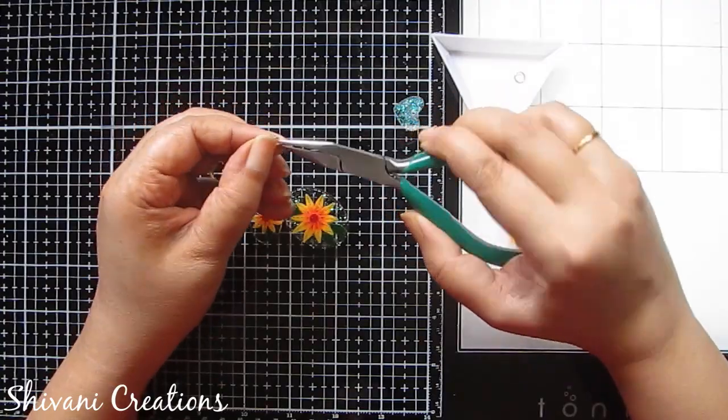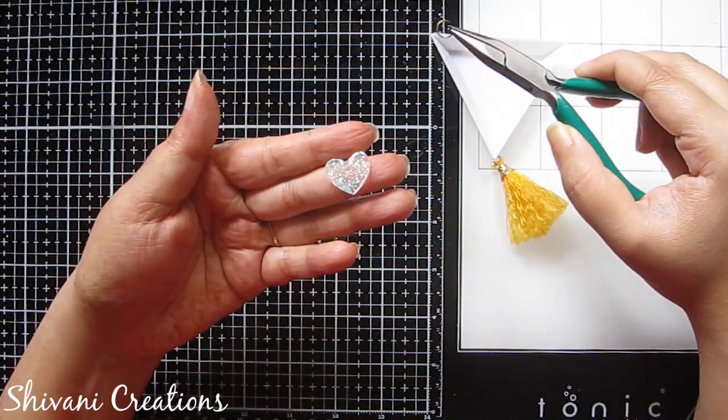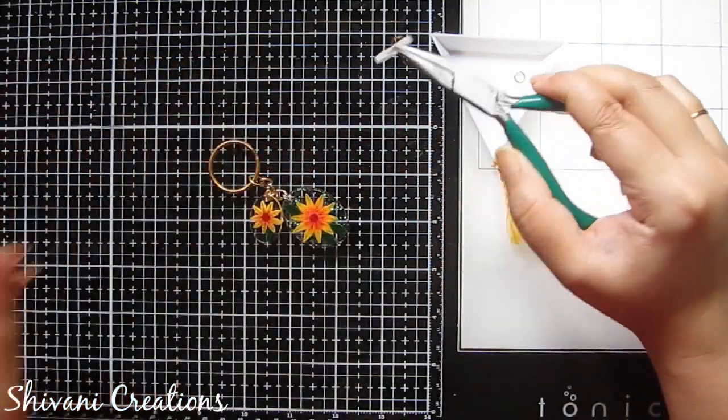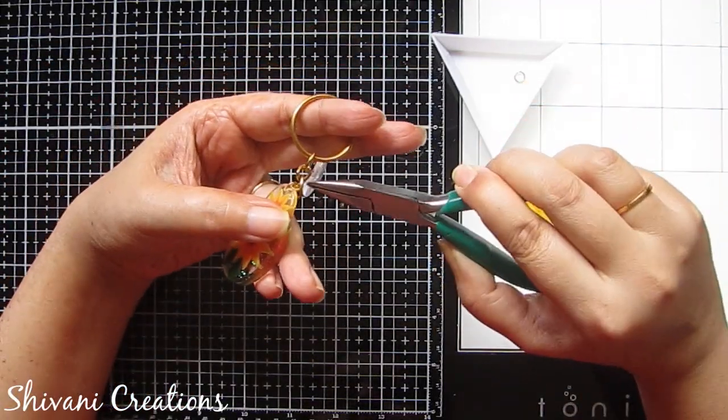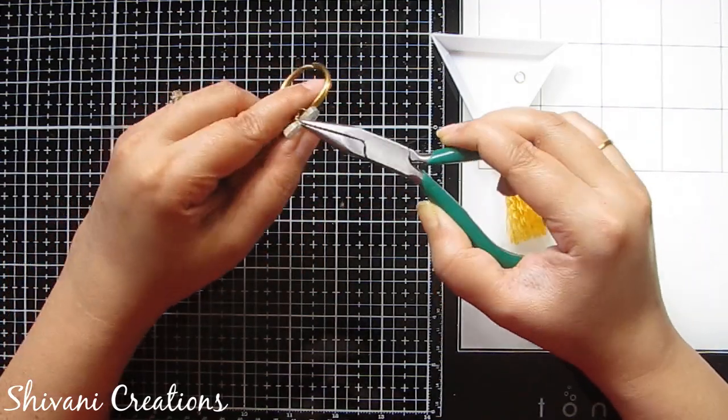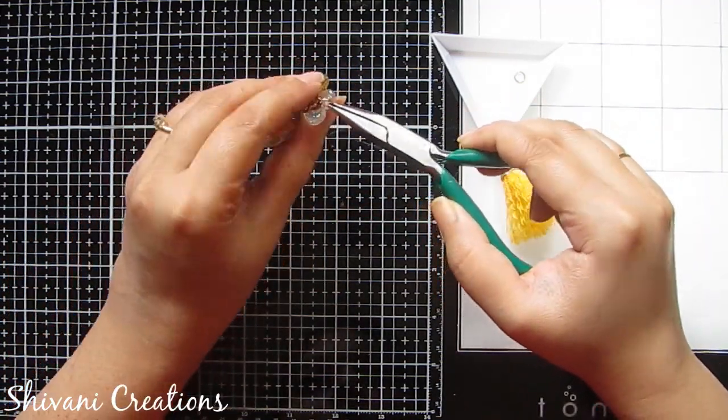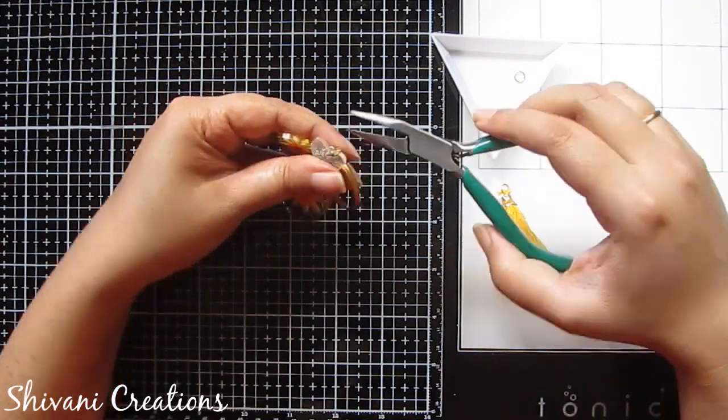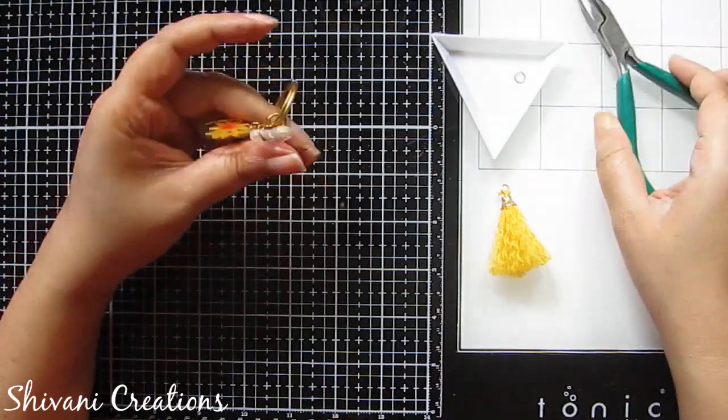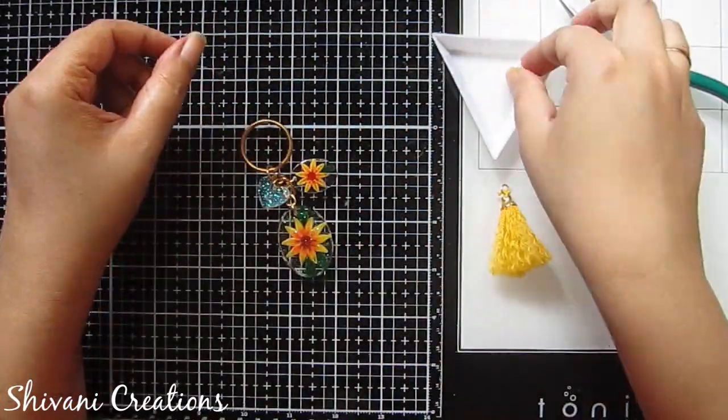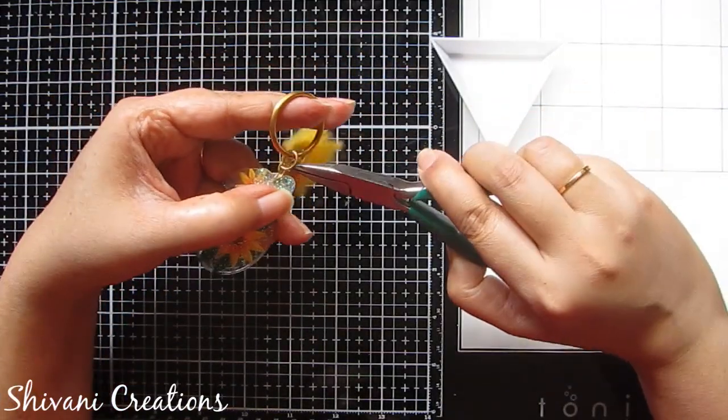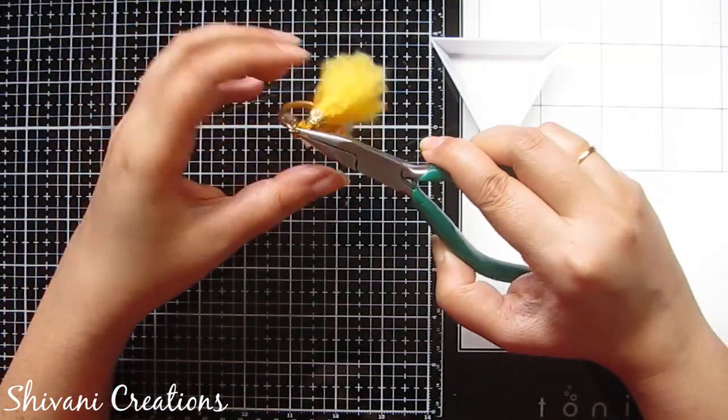Then here I have created one small heart charm using the remaining resin. And I have just mixed the glitter with the resin and poured in my mold. So just pass one jump ring and add with another chain. Then take one more jump ring, pass through your tassel and add on the topmost chain and just secure it.